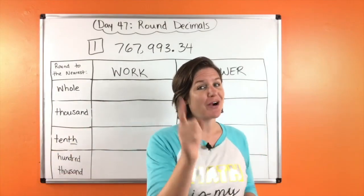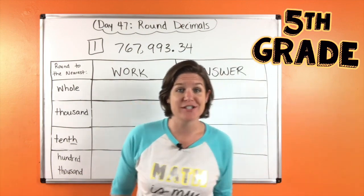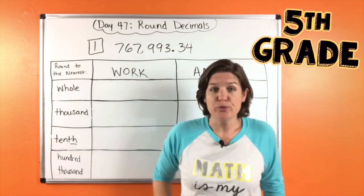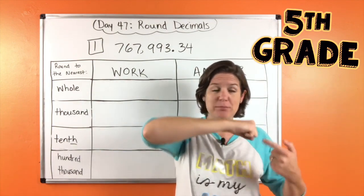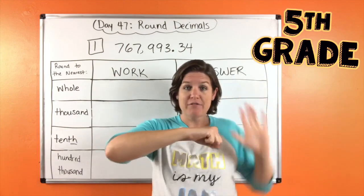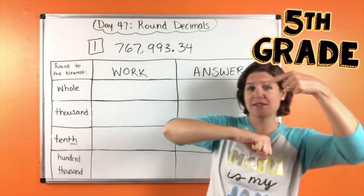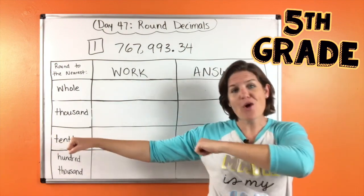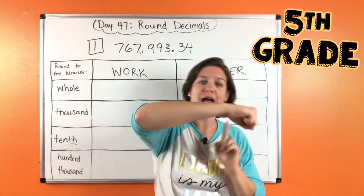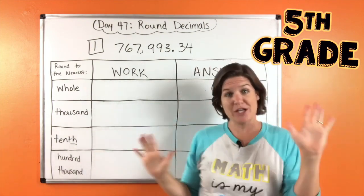Hello everybody and welcome to McCarthy Math 155, this is the fifth grade edition. Today is Day 47, let's go ahead and review the rounding rap. When you round: find and underline the place, spotlight to the right, decide the digit's fate — five or more add one to the rounding place, four or less you just keep it the same. Everything before drop it down, rounding place same or add one, everything after becomes zero. Check me out, now I'm the rounding hero.